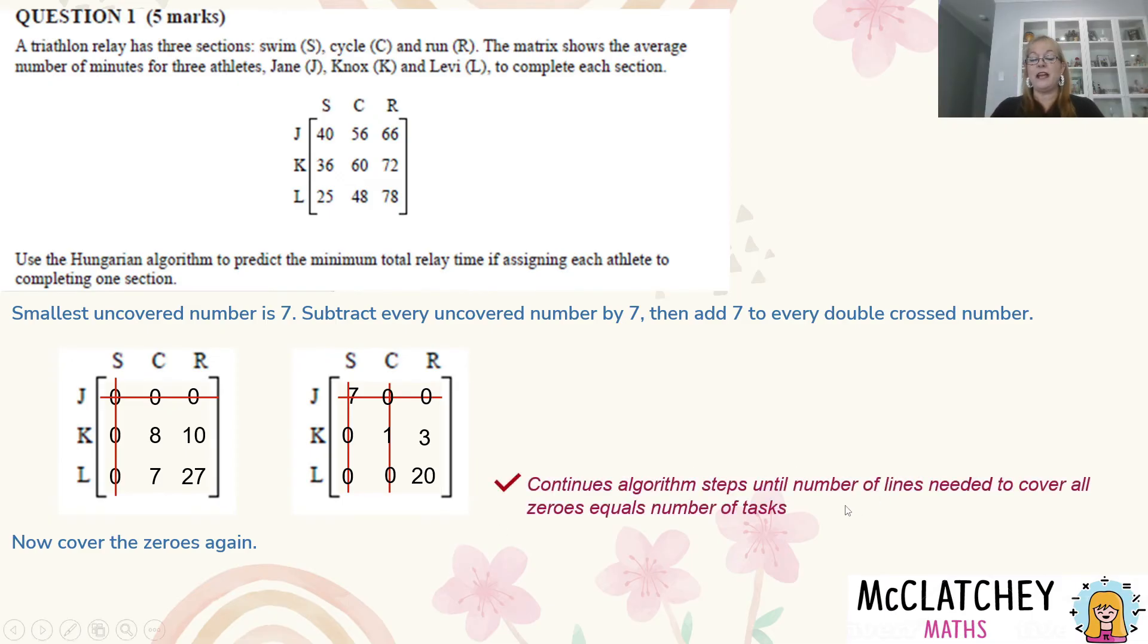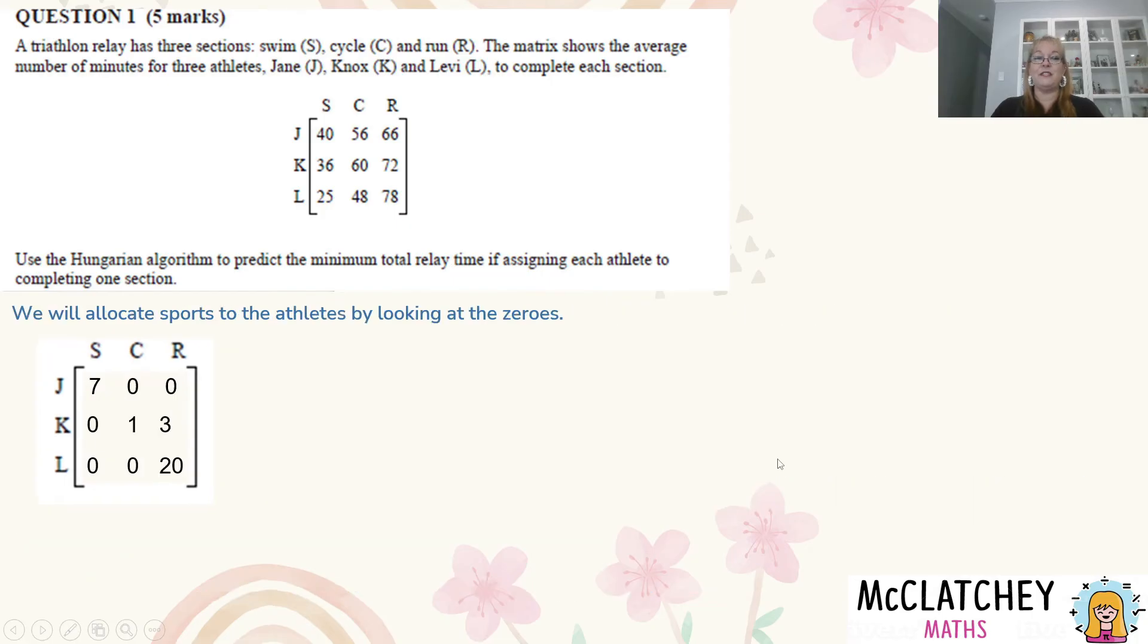And because I've done all the algorithm steps and I've done the right number of covers I get my third mark. But I'm now ready to start making some decisions. Who is going to do what leg? That's the first thing I need to work out. Allocate different sports by looking here at the zeros. Now if I look at the zeros I can see Jane has two sports to choose from, Levi has two sports to choose from, but Knox can only do the swim.